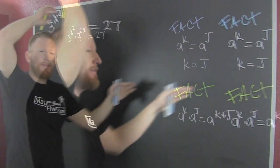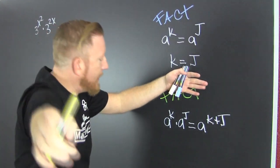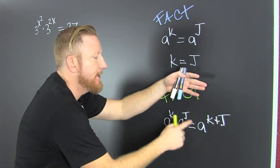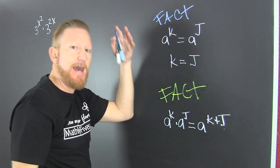But wait, there's more. What do I have if I have a to the k times a to the j? That's a to the k plus j. Fact.